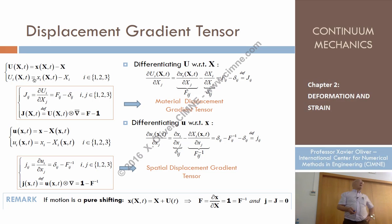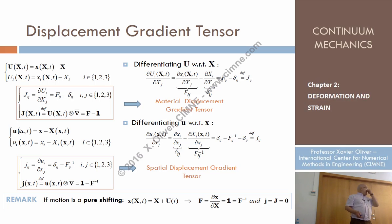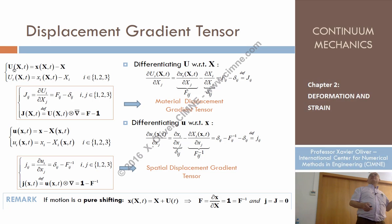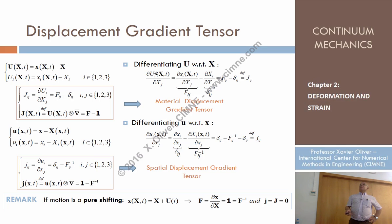Let's go to another concept. We have the displacements described either in material form or in spatial form. We can do something similar to what we did before: we can take the differentials — the derivative of the displacements with respect to the coordinates. Let's differentiate the component i of the material description of the displacements with respect to the material coordinate J. There are two indices here, so this is a second-order tensor.